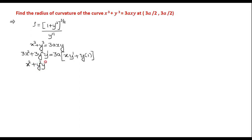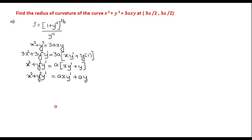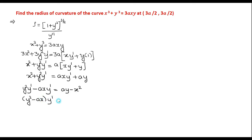So it is x² + y²·y' = a(x·y' + y). Take all the y' terms to the left hand side and the remaining terms to the right hand side: y²·y' − ax·y' = ay − x². Take y' common: y'(y² − ax) = ay − x². So the first order derivative is y' = (ay − x²) / (y² − ax).